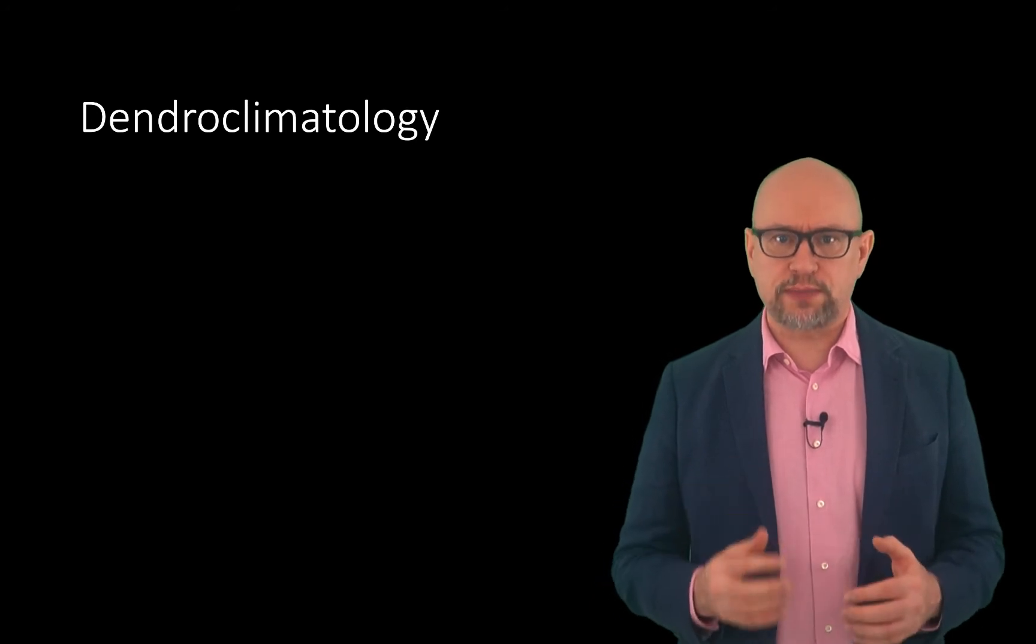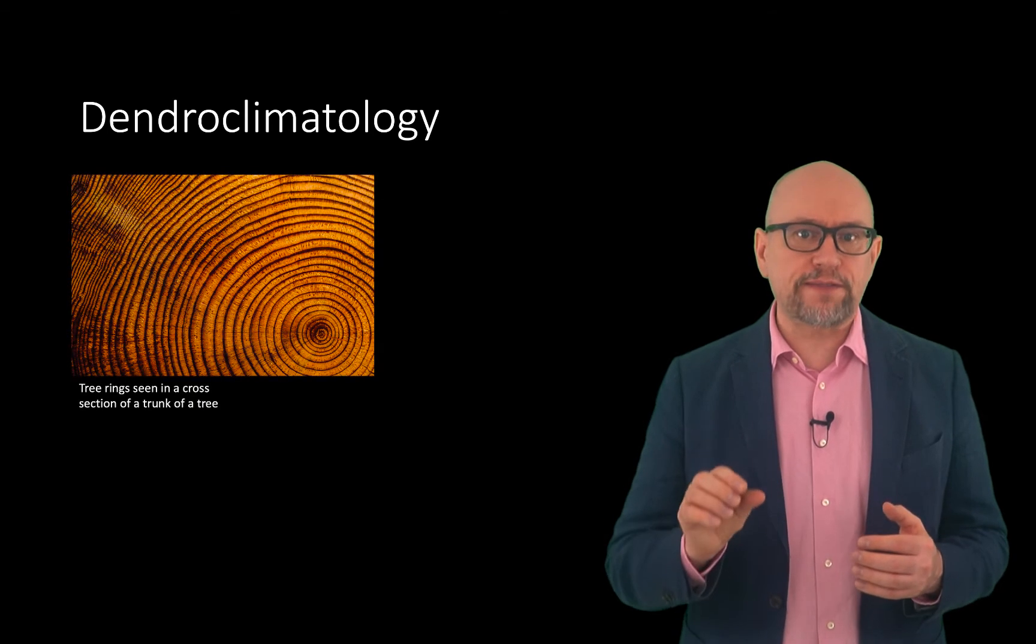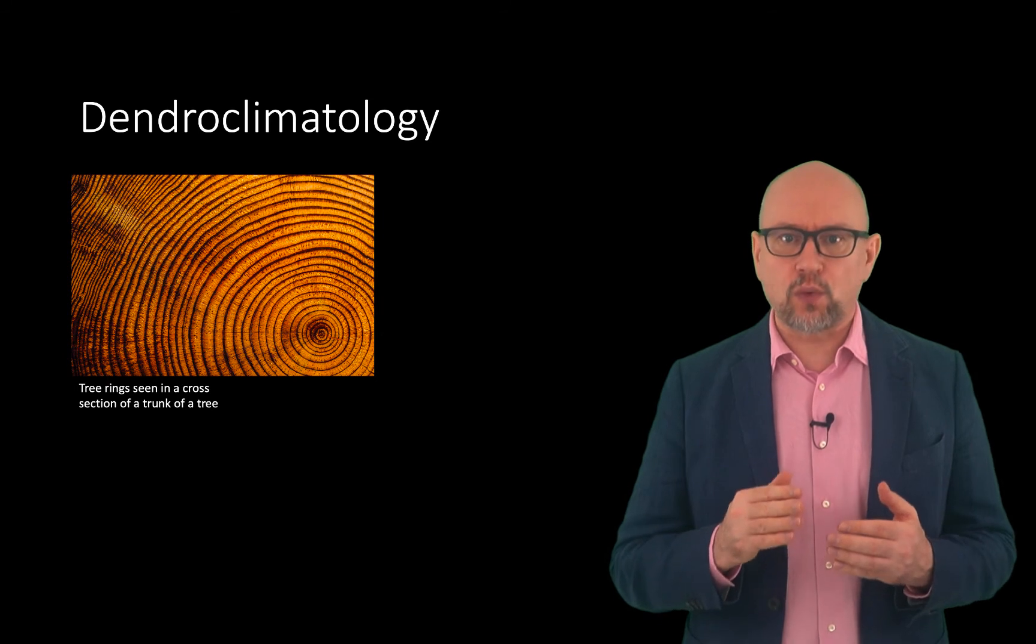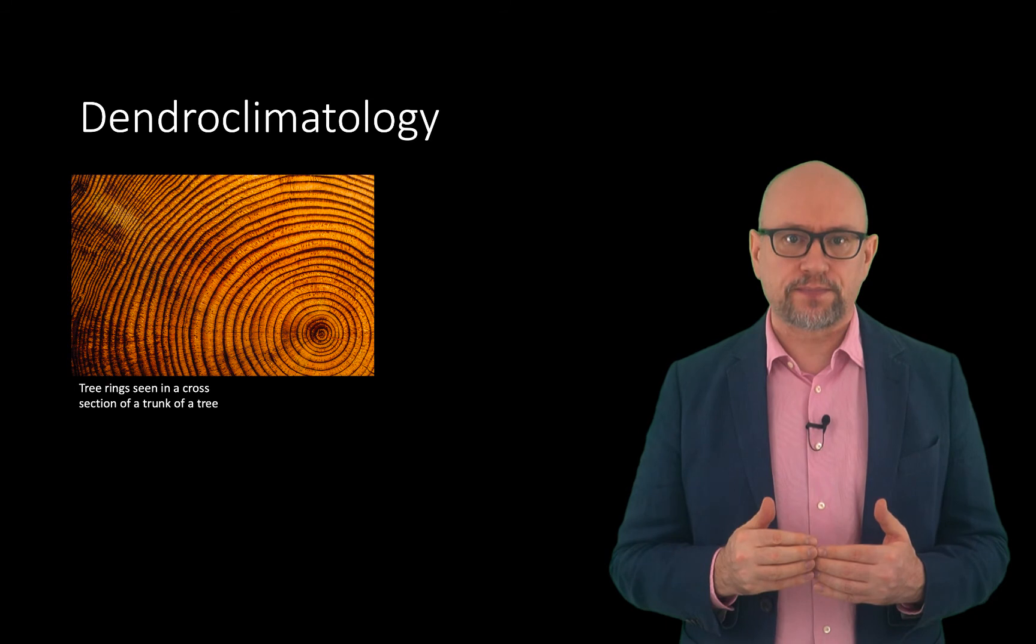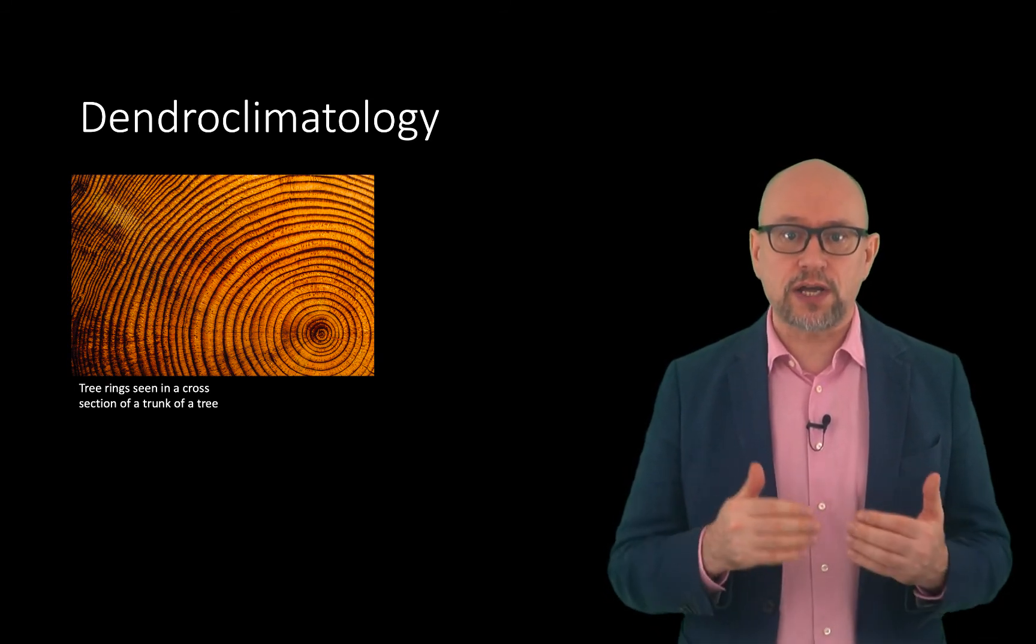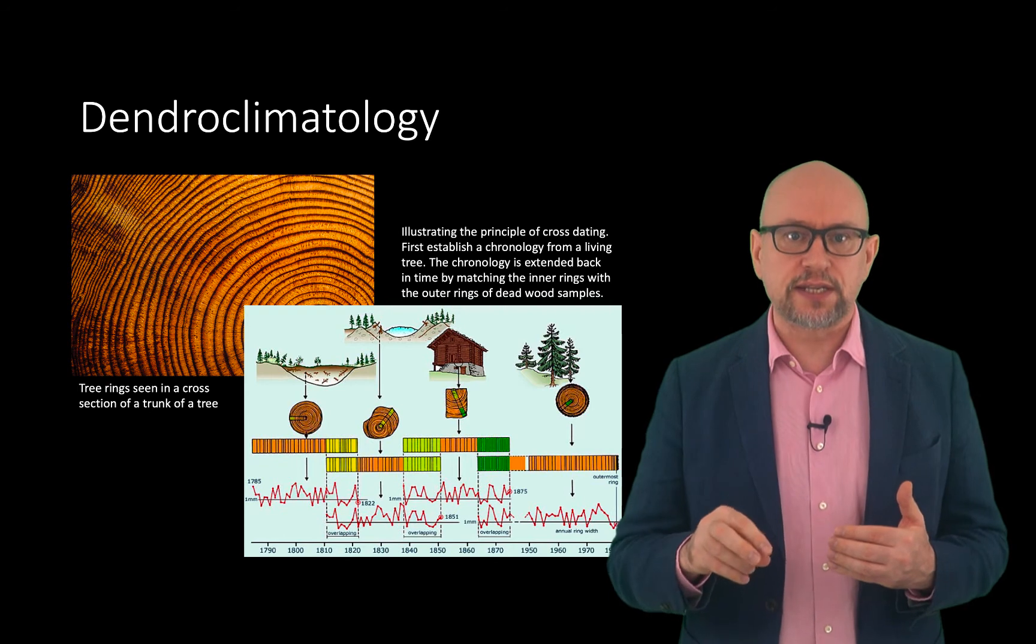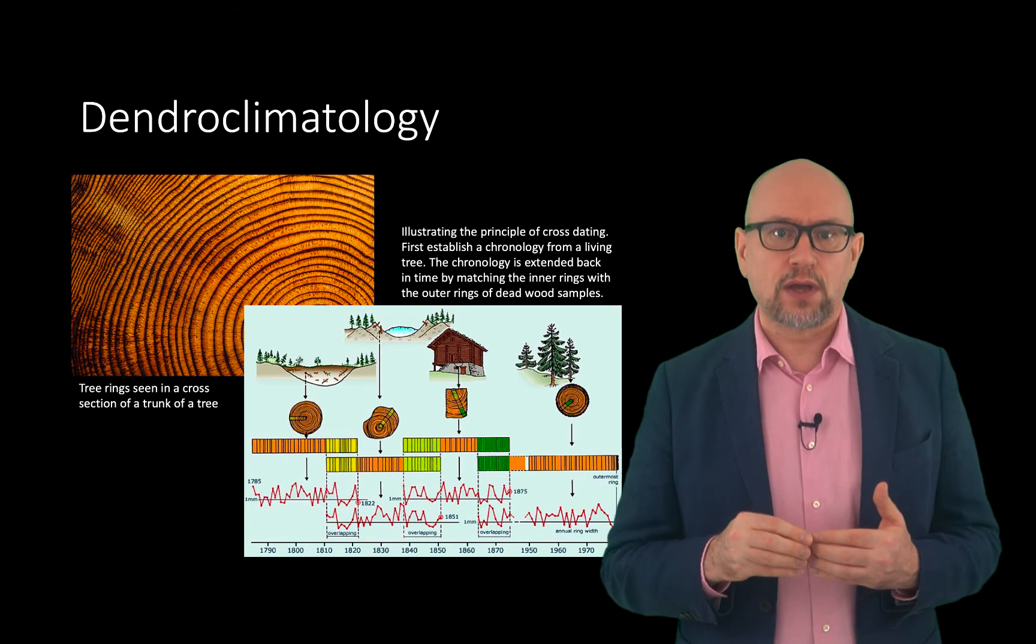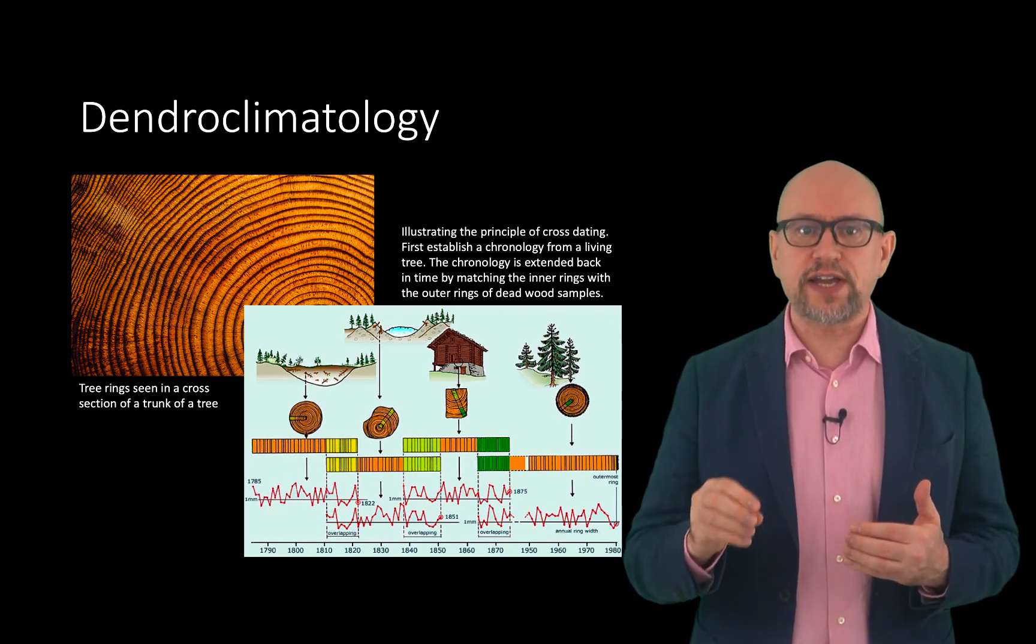Perhaps the most well-known proxy method in temperature reconstructions is dendroclimatology, in which the width of the tree rings is used to determine past climate. Tree rings are wider when conditions favor growth and narrower when times are difficult. Using tree rings, scientists have estimated many local climates for hundreds to thousands of years previous. By combining multiple tree ring studies, scientists have estimated past regional and global climates. One of the particular advantages of tree ring studies is the ease with which tree rings can be dated.